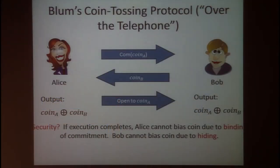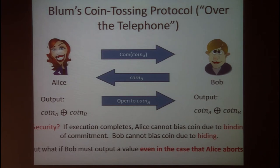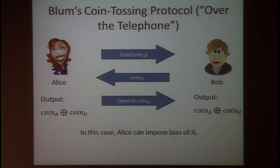If the execution completes, Blum's coin toss is secure: Alice cannot impose bias due to the binding property of the commitment scheme, and Bob cannot impose bias due to the hiding property. However, if Bob must output a value even when Alice aborts early before sending her last message, Blum's protocol is no longer secure — Alice can impose substantial bias on Bob's outcome by deciding whether or not to send the last message depending on whether it's favorable for her.